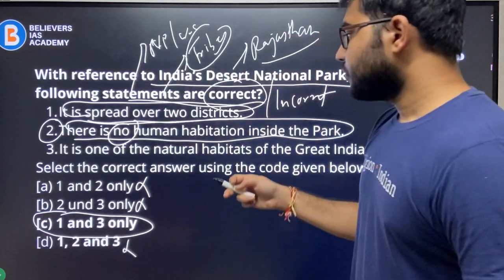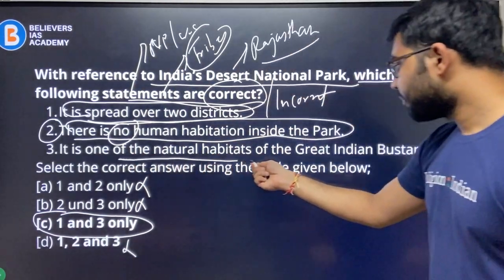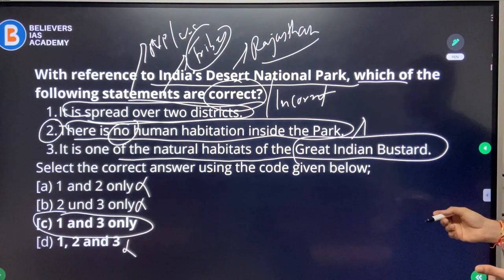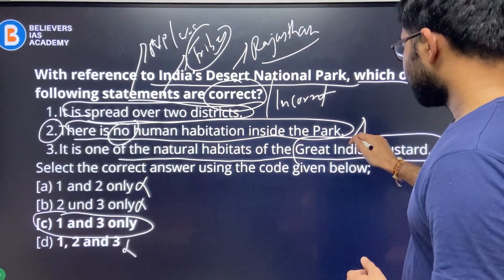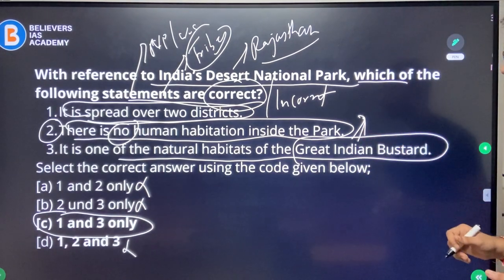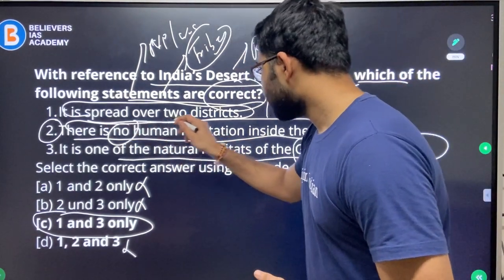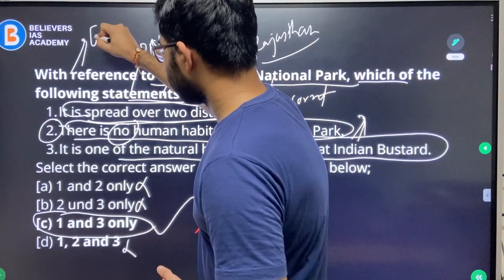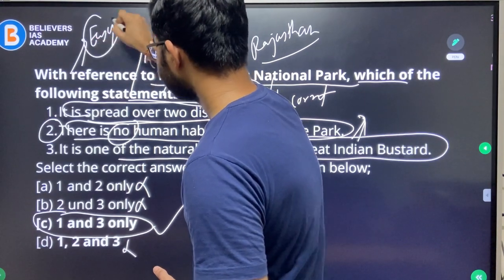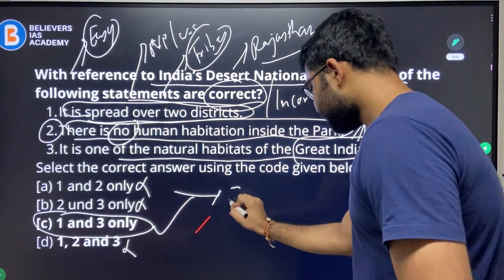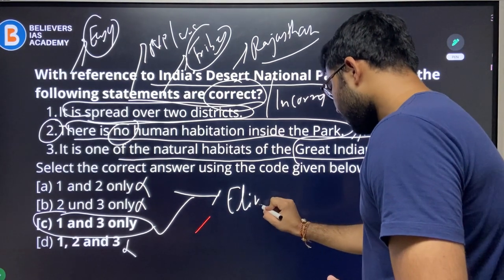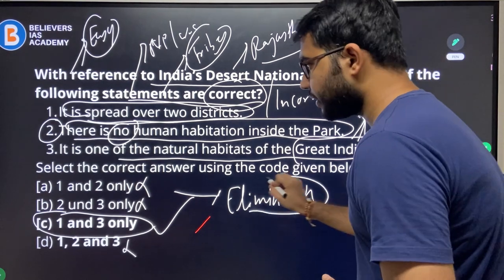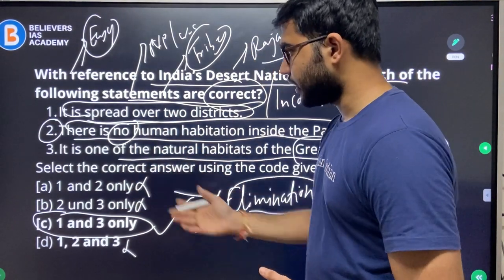Since we eliminate the second statement, C — one and three — is your answer. The third statement says it is one of the natural habitats of the Great Indian Bustard, which is common knowledge if you follow the news. Even if you don't know that it is spread over two districts, you can still get to the correct answer. This is a very easy question; you can solve such kinds of questions through elimination techniques — just by eliminating one statement you can easily arrive at the correct answer.